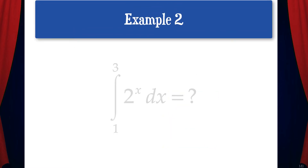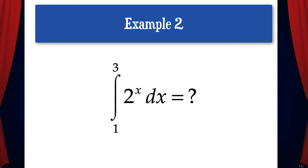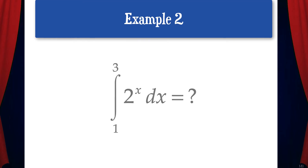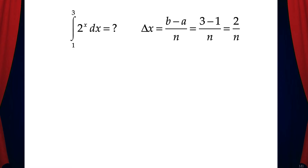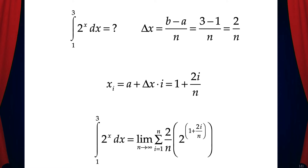Let's do another example. Here we have the integral from 1 to 3 of 2 to the x dx. Let's write this as the limit of a Riemann sum. Delta x is b minus a over n, which is 3 minus 1 over n, giving us 2 over n. Then x sub i is a plus delta x times i, which gives us 1 plus 2i over n. The final answer: the integral from 1 to 3 of 2 to the x dx equals the limit as n goes to infinity of the sum where i goes from 1 to n of 2 over n times 2 to the 1 plus 2i over n. Here 2 over n is delta x and 2 to the 1 plus 2i over n is f of x sub i.